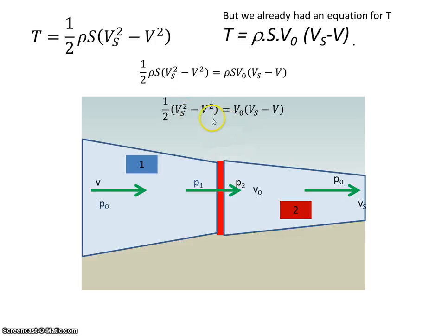Well if we look at vₛ² minus v², that's equal to (vₛ minus v)(vₛ plus v). So I'm going to put this expression back in here. So this guy has been replaced by this, and immediately we can see that that is going to cancel out with that.